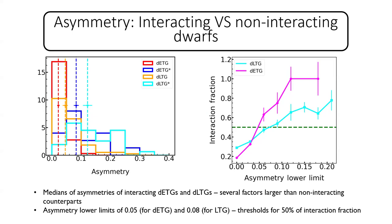We find that an asymmetry lower limit of about 0.05 for dwarf early types and about 0.08 for dwarf late types could serve as thresholds corresponding to roughly 50% interaction fraction. This could provide a way of constraining the interaction fraction in these dwarfs, though not very precisely. This may improve with higher-resolution surveys like LSST or Euclid and larger statistical samples.